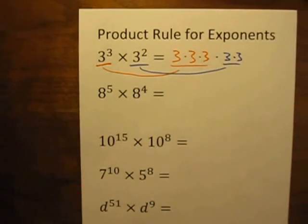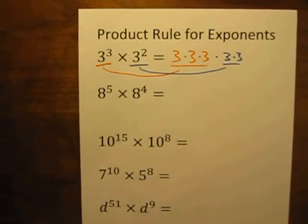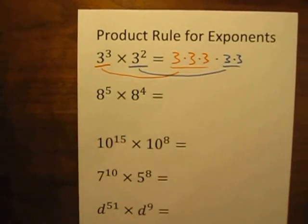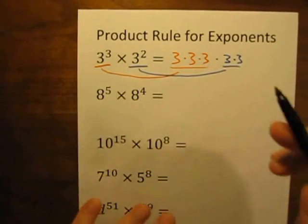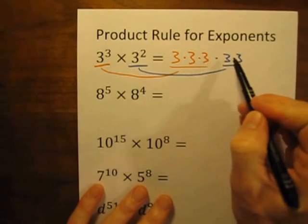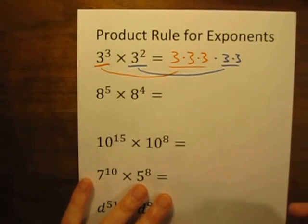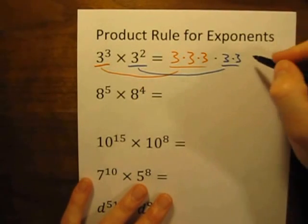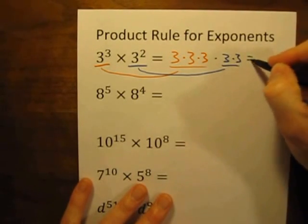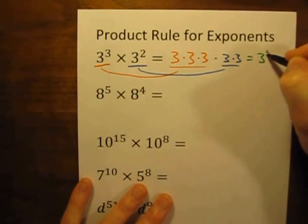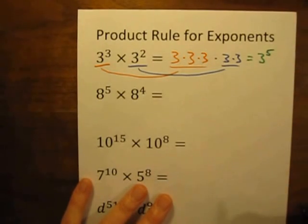If you remember from your exponent basics, that is 3 times itself 5 times — there are five 3s multiplied together. So another way that we could write that is 3 to the 5th power.